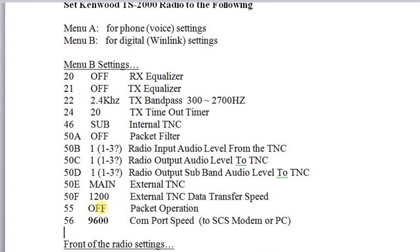Item 55 is for the internal TNC that's built into the Kenwood radio. If you're going to use the internal TNC instead of an external one, you turn this on and it will activate the internal TNC. We're not going to be using it, so let's leave it off. The last item is 56 — this is the COM port speed on the back of the radio — set that to 9,600. You're going to be seeing that number a lot in future videos.